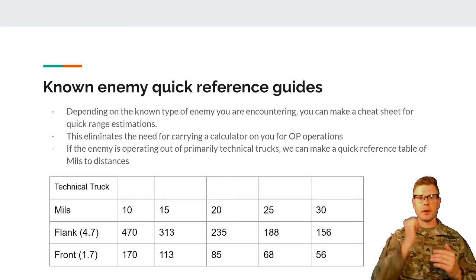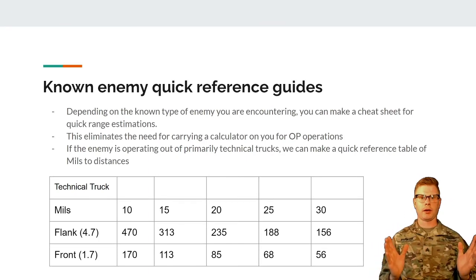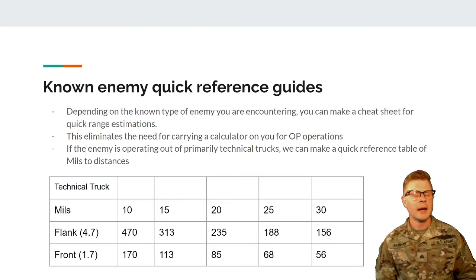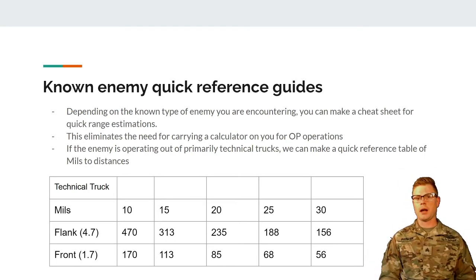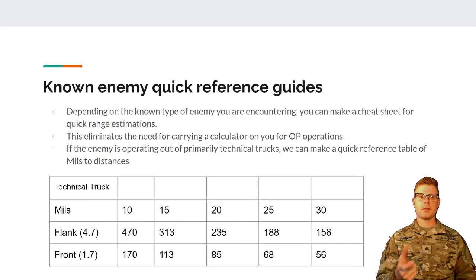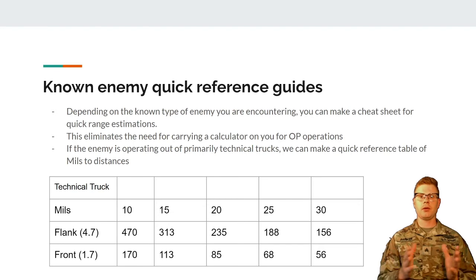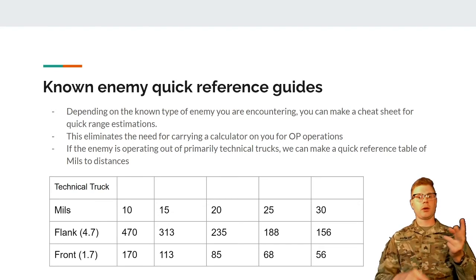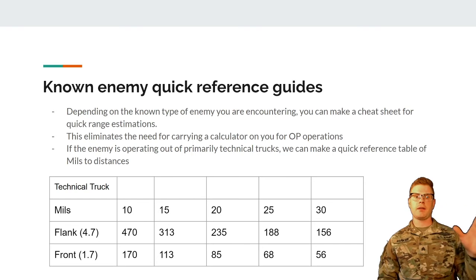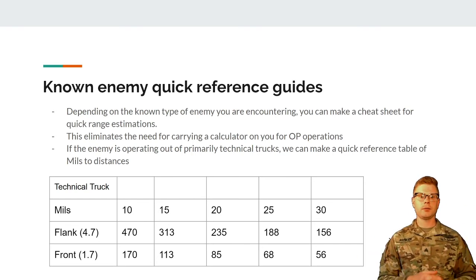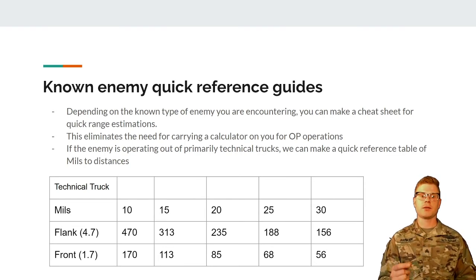I know at this point everybody's thinking: I'm not carrying a calculator at all times — I'm a grenadier, I'm a 240 gunner, a 249 gunner, I've got all this stuff on me. Having everyone carry a calculator may not be realistic, but maybe one per squad is a pretty good idea. What we can do is make known-enemy quick reference guides. Go through and find common items in your battle space — maybe the 55-gallon drum, maybe Toyota Hiluxes, maybe a certain vehicle type in your area. Depending on the known type of enemy you're encountering, you can make a cheat sheet for quick range estimations.